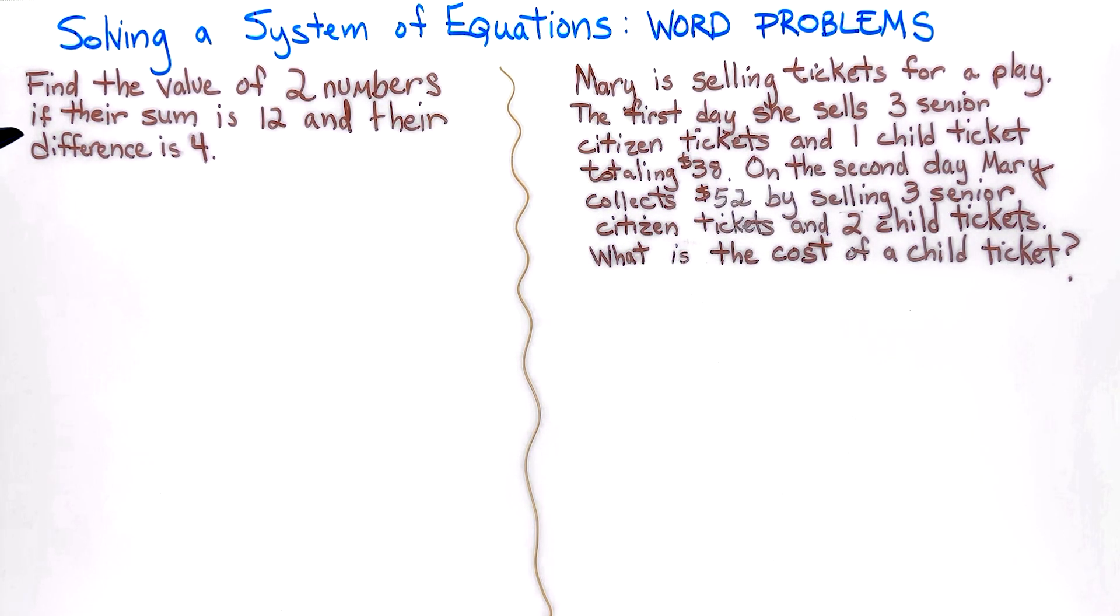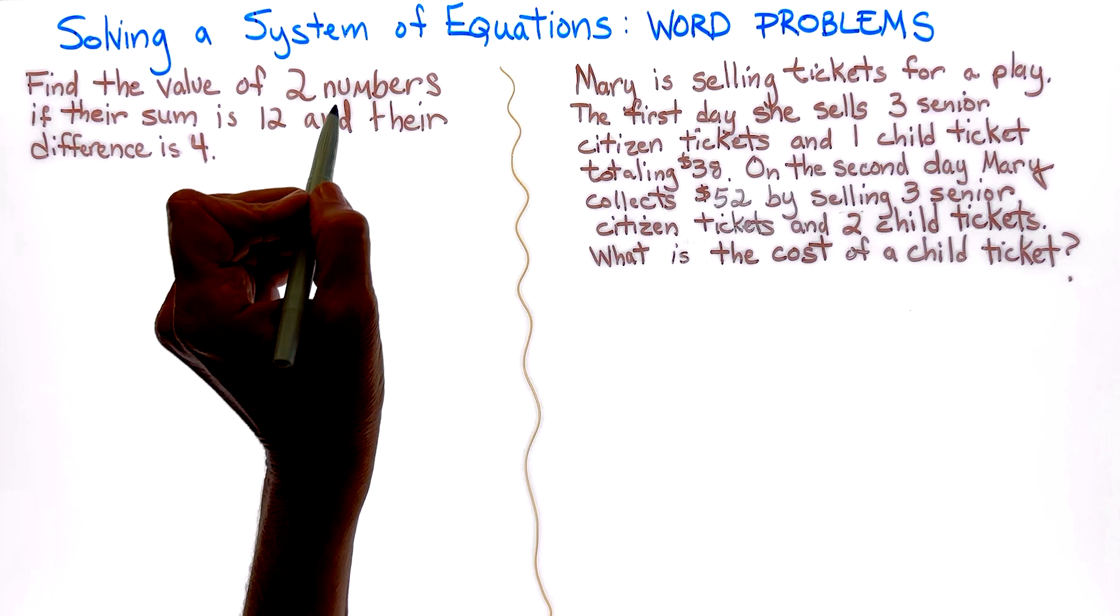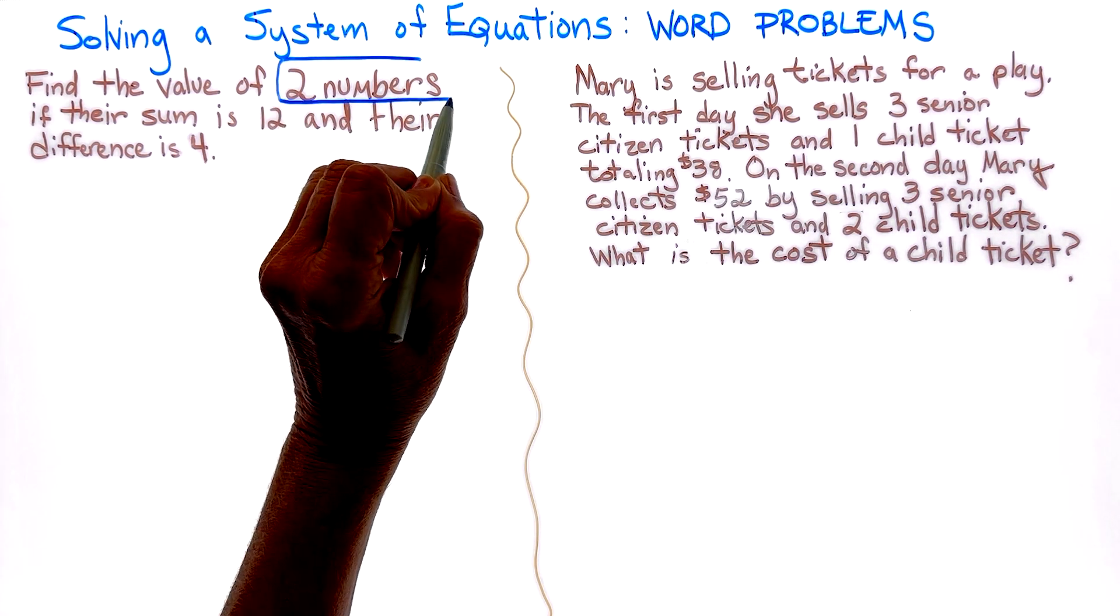Looking at the first problem, we have find the value of two numbers if their sum is 12 and their difference is 4. All right, so let's mark our text. So we know that we are looking for two numbers.